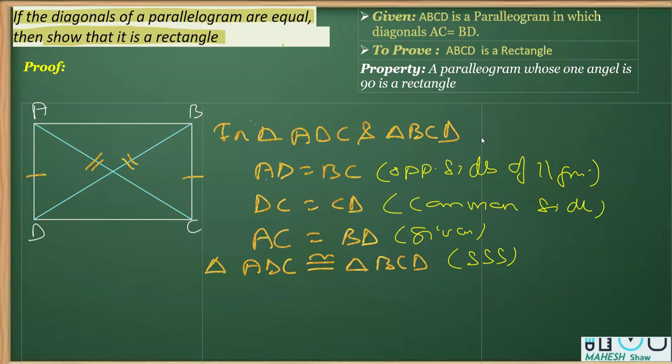Now once the triangles become congruent, I can write these angles as equal, that is by CPCT. So I can write angle ADC is equal to angle BCD, and that is from CPCT.